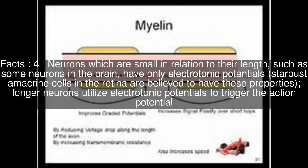Neurons which are small in relation to their length, such as some neurons in the brain, have only electrotonic potentials. Starburst amacrine cells in the retina are believed to have these properties. Longer neurons utilize electrotonic potentials to trigger the action potential.